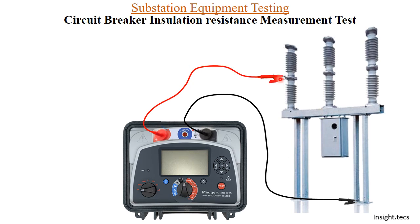Now we will connect the red terminal to the bottom part of the circuit breaker and the black terminal to earth. This measurement will give us the IR value between the bottom to earth. We will set it to 5 kV and test for 1 minute. After 1 minute, the result is 65 giga ohms, that is 65,000 mega ohms. We will note down this value and conduct the next test.